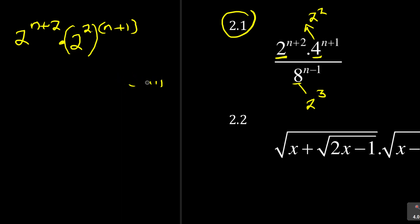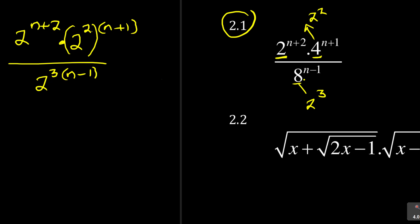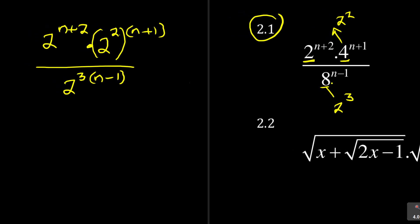The best way to avoid this error is to put a bracket, like this, and also put a bracket around n plus 1, so that the whole bracket shows that the 2 is affecting n plus 1 — that's the key thing. I'll show you the simpler way you could have written this. For the denominator, 8 is 2 to the power of 3 — instead of the nested bracket approach, you can simply write bracket n minus 1, which simplifies things a lot.